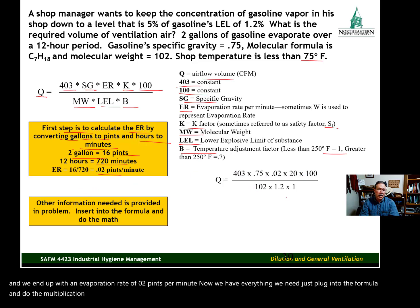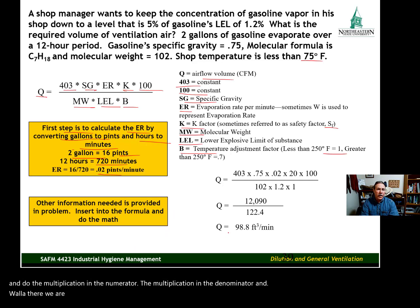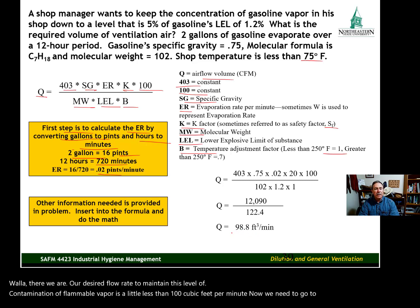Now we have everything we need to plug into the formula and do the multiplication in the numerator and the denominator. And voila, there we are. Our desired flow rate to maintain this level of contamination of flammable vapor is a little less than 100 cubic feet per minute. Now we need to go to our ventilation system and make sure it's providing that flow rate.